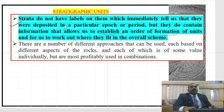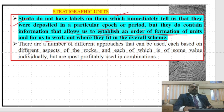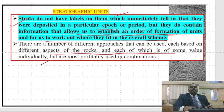Coming to stratigraphic units: strata do not have labels on them which immediately tell us they were deposited in a particular epoch or period, but they do contain certain information that allows us to establish an order of formation of units and to work out where they fit into correlation schemes. There are a number of different approaches, each based on different properties of rocks, which are most profitably used in combination.